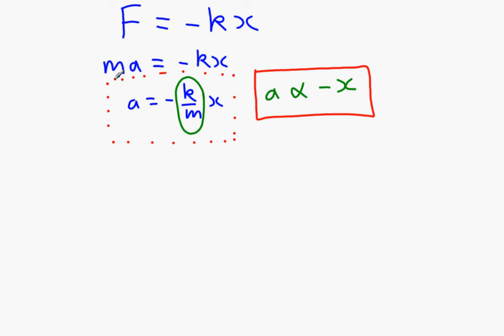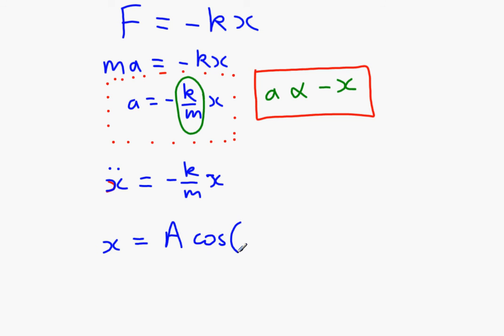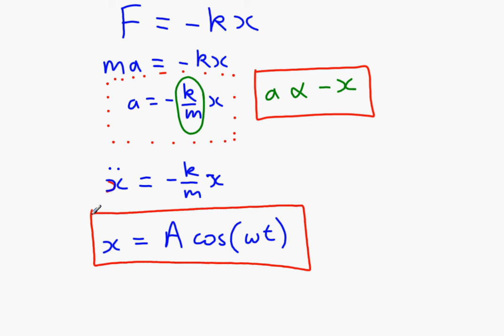This next bit you don't need to know — it turns out this is a differential equation, which says that the acceleration is the second derivative with respect to time of displacement. If you differentiate displacement with respect to time once you get velocity; differentiate again and you get acceleration. So this is saying the second derivative of displacement with respect to time equals minus k over m times x. You don't need to be able to solve it, but you do need to know that one possible solution is x equals A cos(ωt).